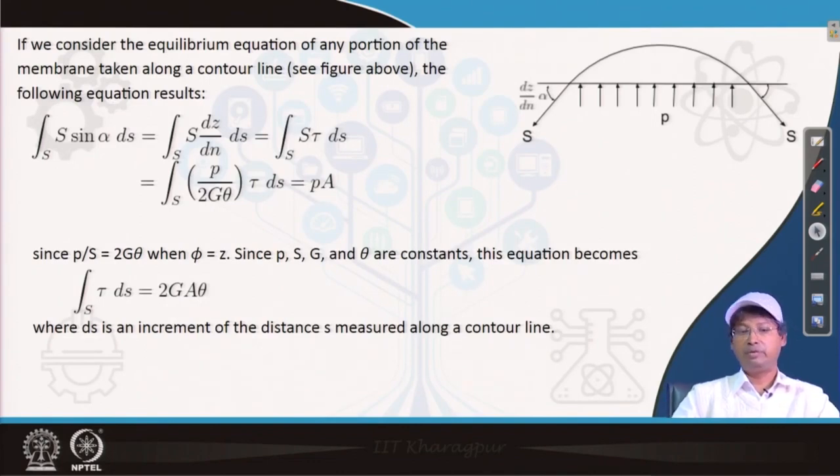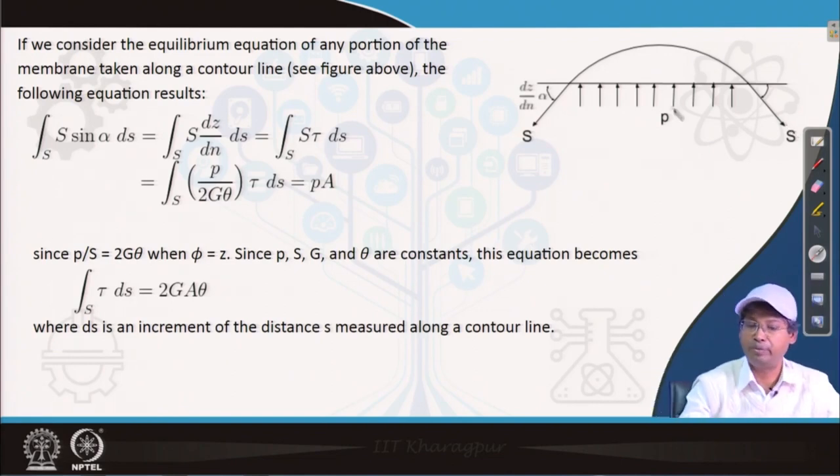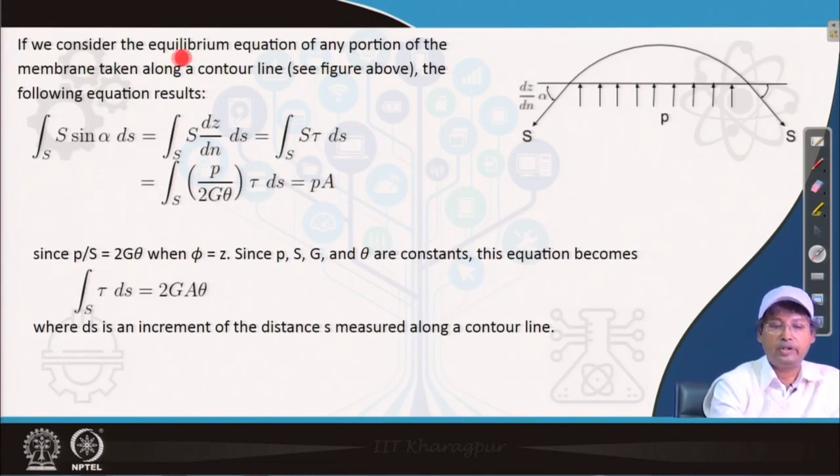We will continue with the membrane analogy to find out torsional stresses and deflections. In this connection we come to the relation between the stress and theta with respect to membrane. We are considering again one stretched membrane which is under pressure P. This stretched membrane is stressed on the surrounding or the edges of the structure which is under torsion. If we consider the equilibrium equation of any portion of the membrane taken along a contour line, the following equation results.